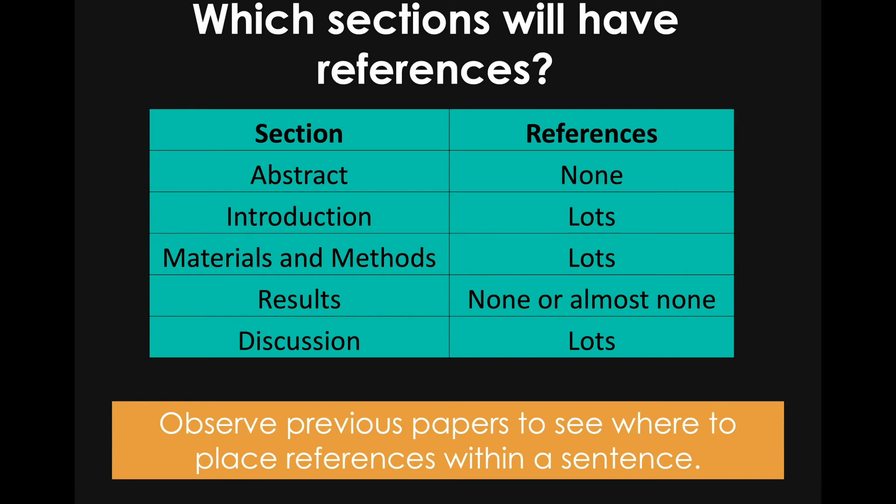Where do you drop the in-text citation within your sentences? I recommend you look at the papers you're reading and see how they do it. There are natural places where you would want to drop the references — sometimes it's in the middle of the sentence, not always at the end. You might have a compound sentence with different phrases that each need citations, so you might drop references before you get to the end of the sentence. Get a feel for how it's done in your field.